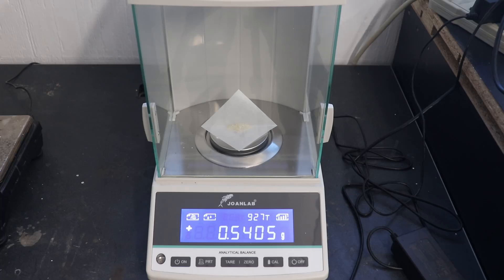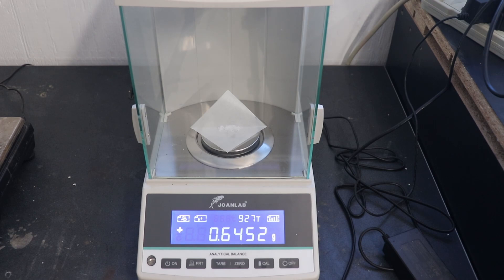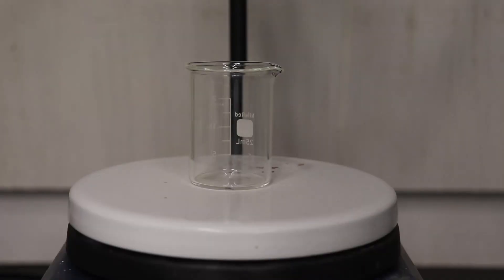To get started, I weighed out 540 mg of orthophenylenediamine and 645 mg of selenus acid. The selenus acid was dissolved in a minimal amount of distilled water.